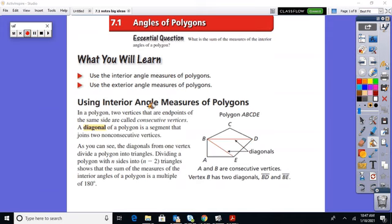What is the sum of the measures of interior angles, and then we're going to take a look at some of the exterior angles in any polygon. First off, a polygon. Two vertices that are endpoints at the same side are called consecutive vertices.